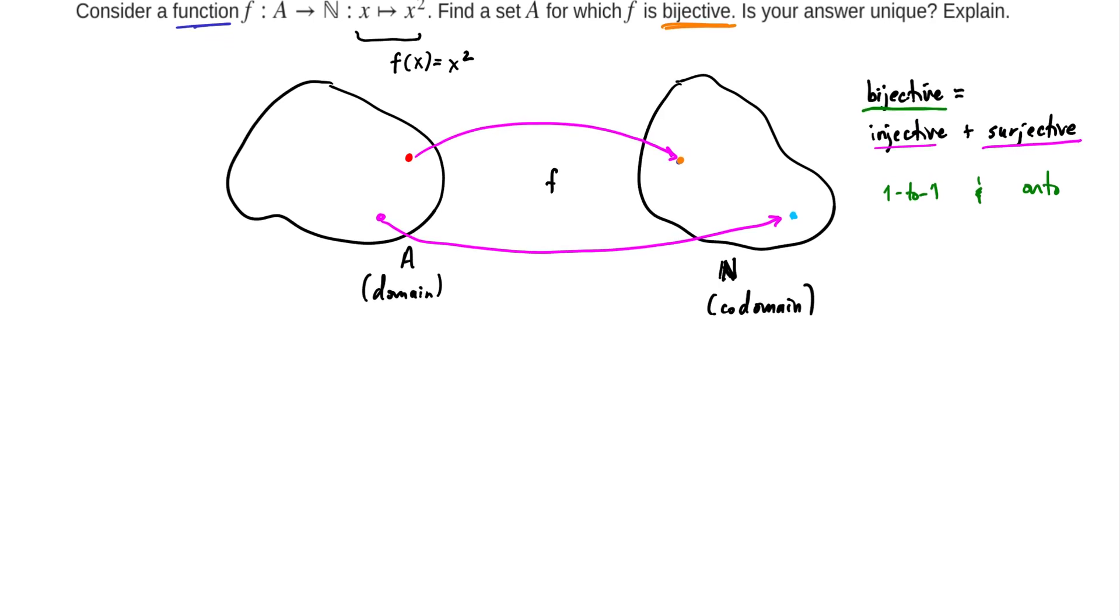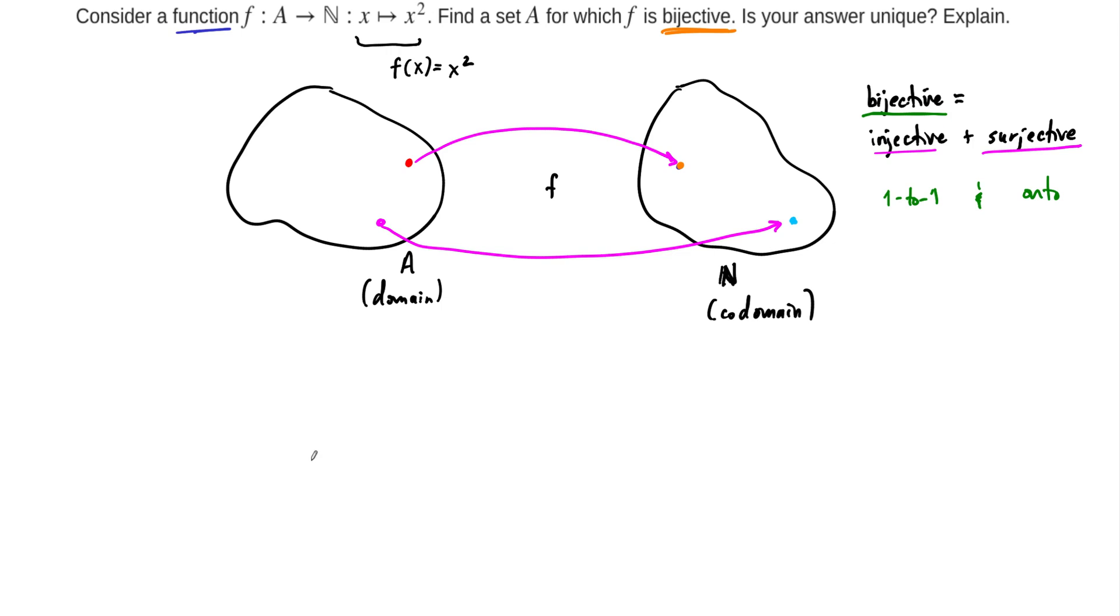So what do we need? We are told that the codomain is the natural numbers. So we need to find a set A. I'll call it B just because functions in math usually go from A to B. So B equals the natural numbers. We need to know what would A have to be in order for this function to be a bijection, to be bijective.